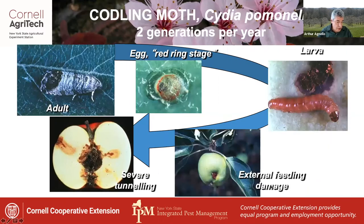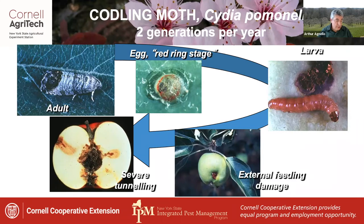Codling moth, also a tortricid, has two generations per year and a similar biology to the oriental fruit moth. Adults emerge during mid-bloom and lay eggs singly on or near the fruit, so the larvae don't have far to travel once they hatch. They enter and develop entirely within the fruit, causing severe tunneling damage — sometimes even eating the seeds — as well as very noticeable external damage.